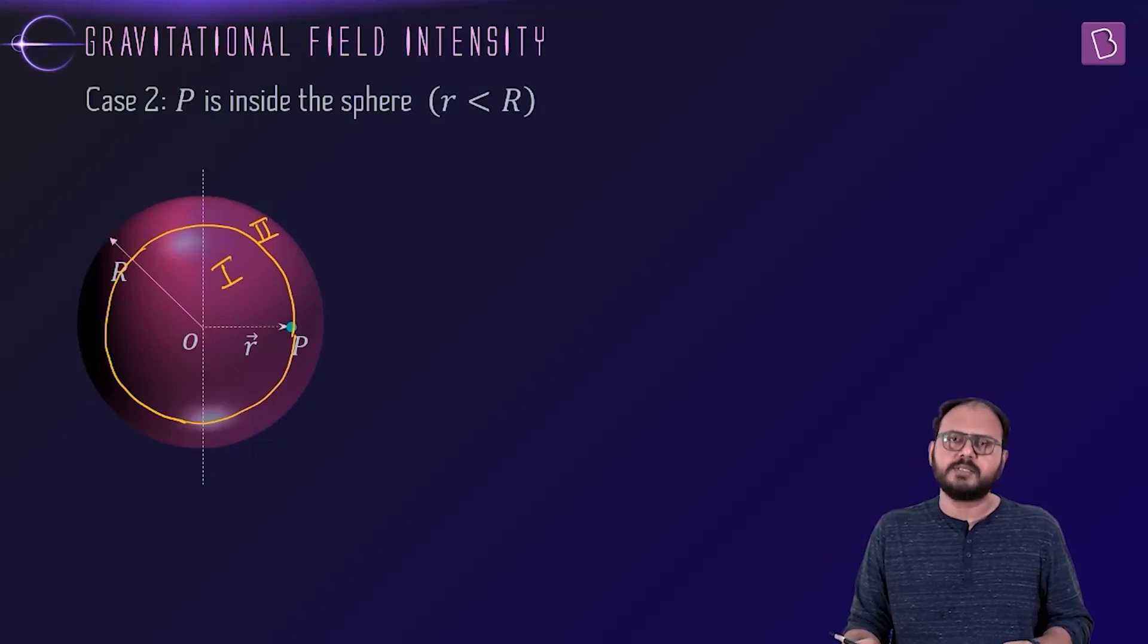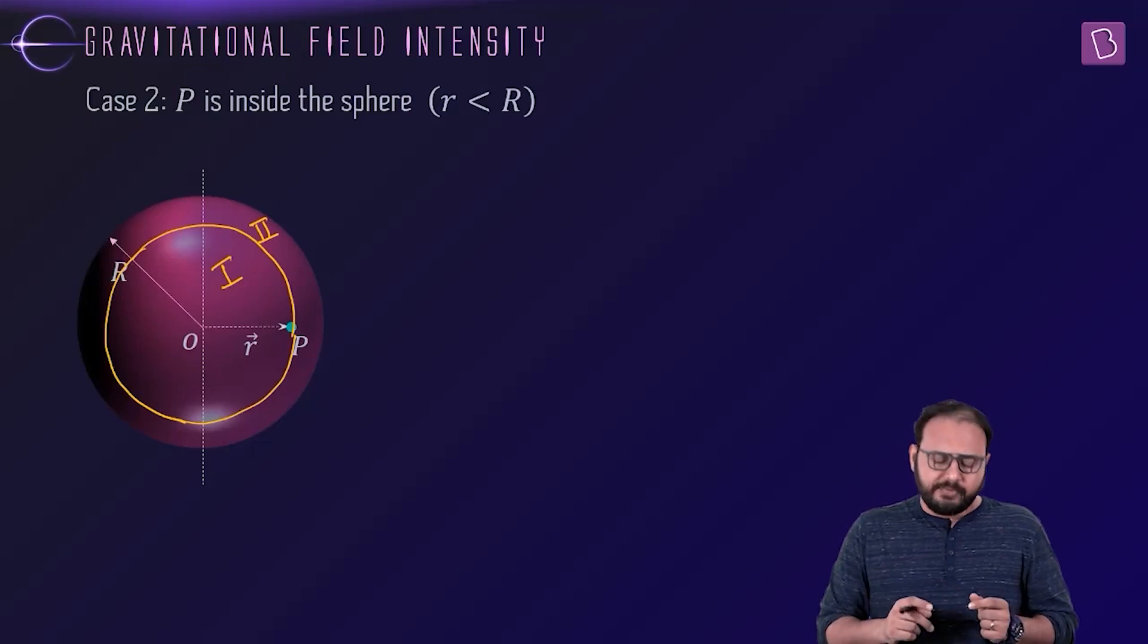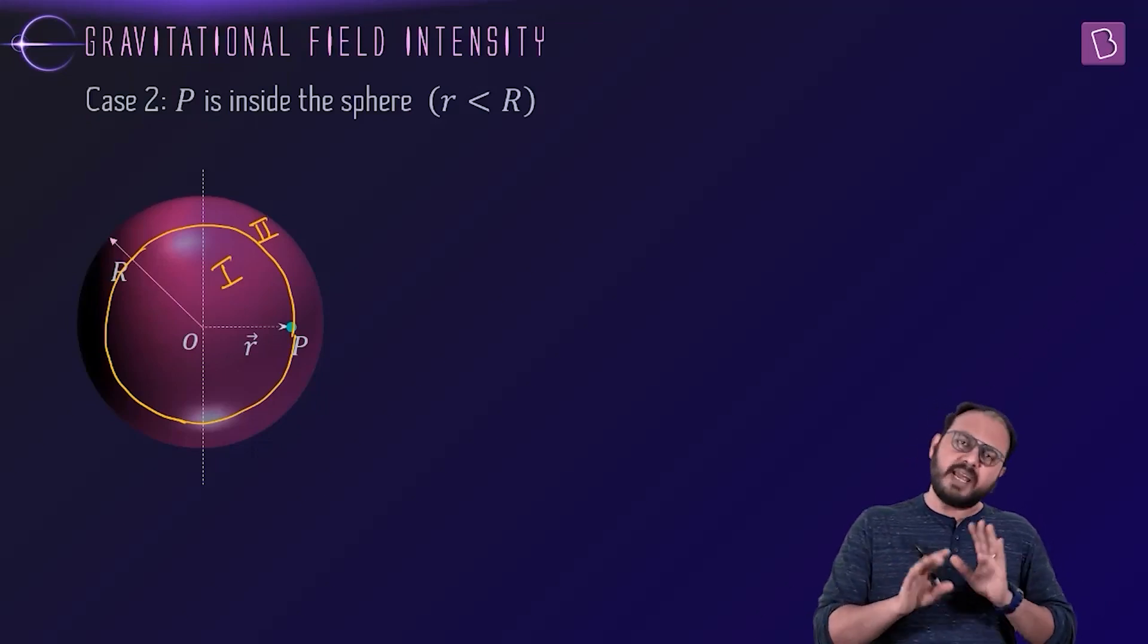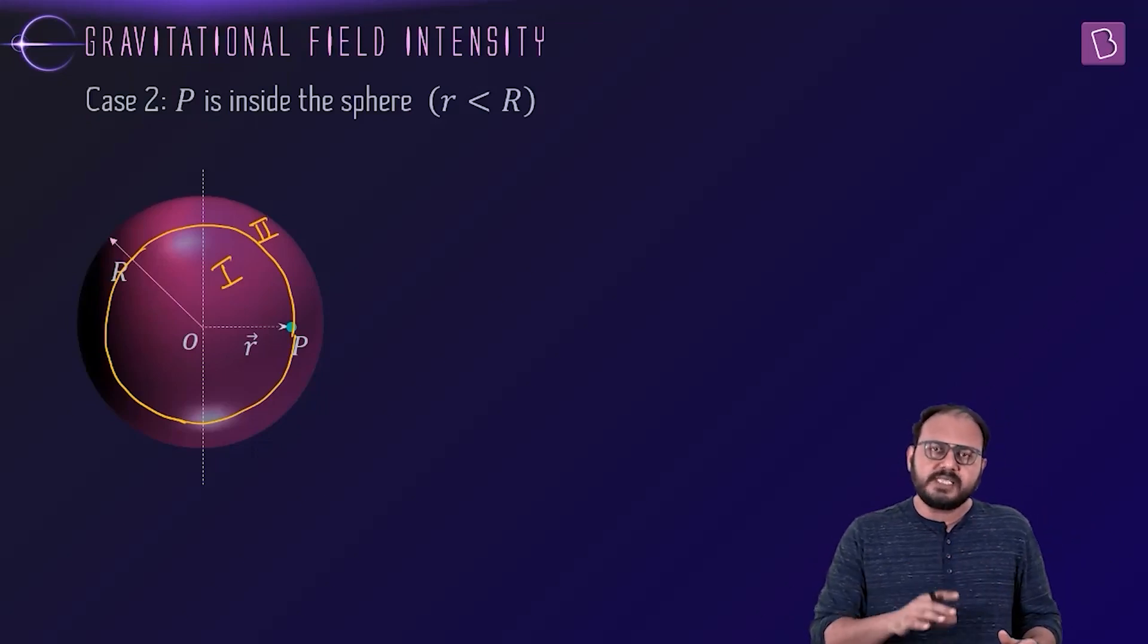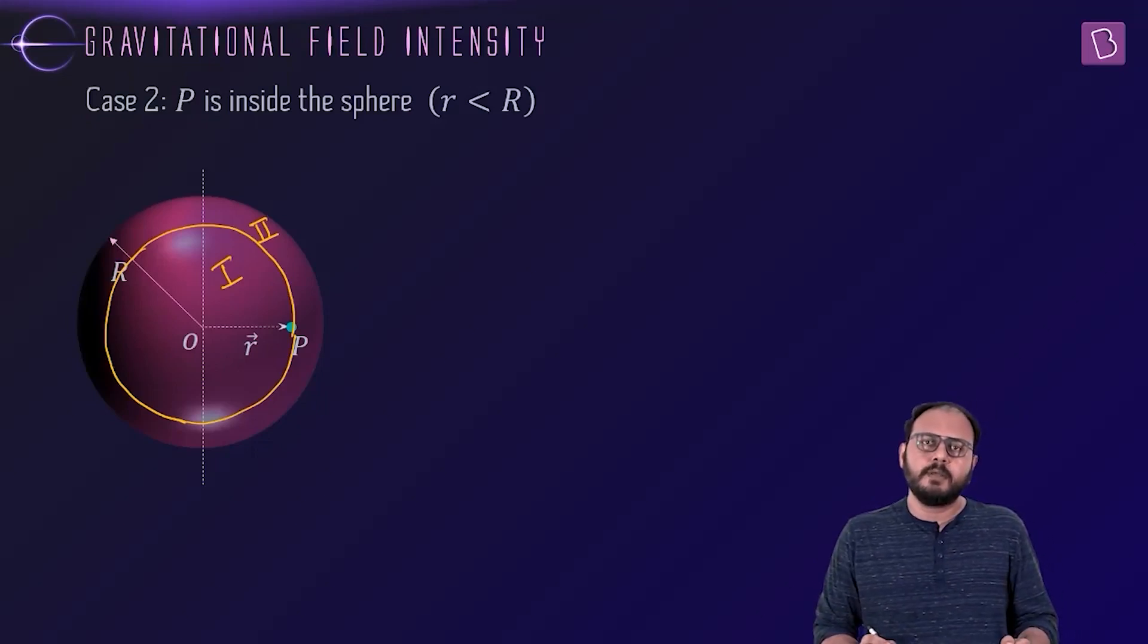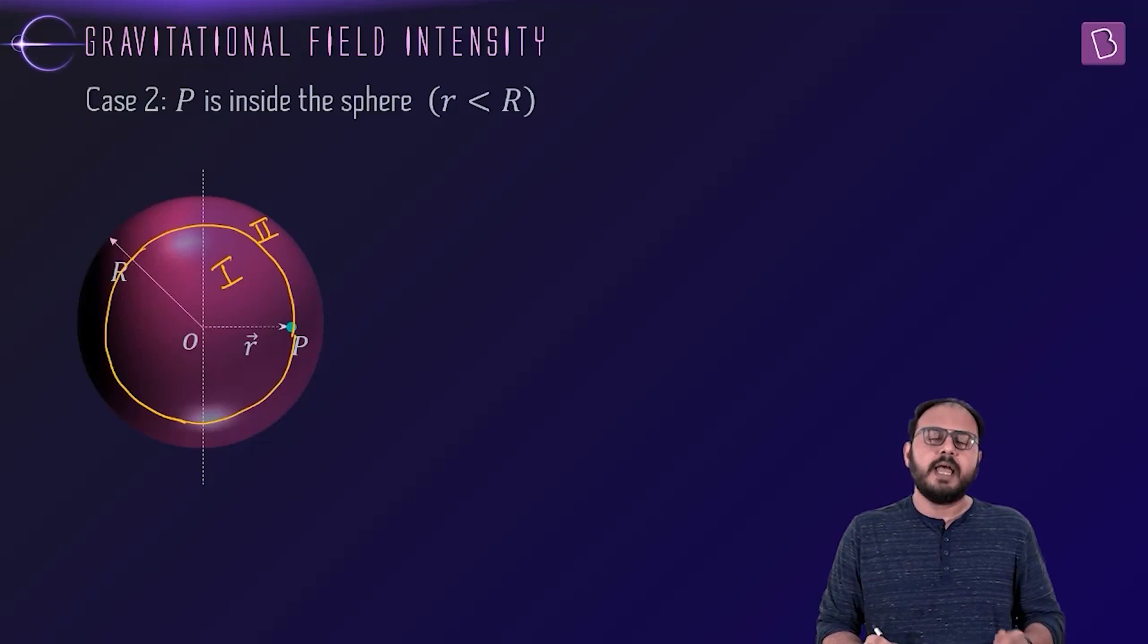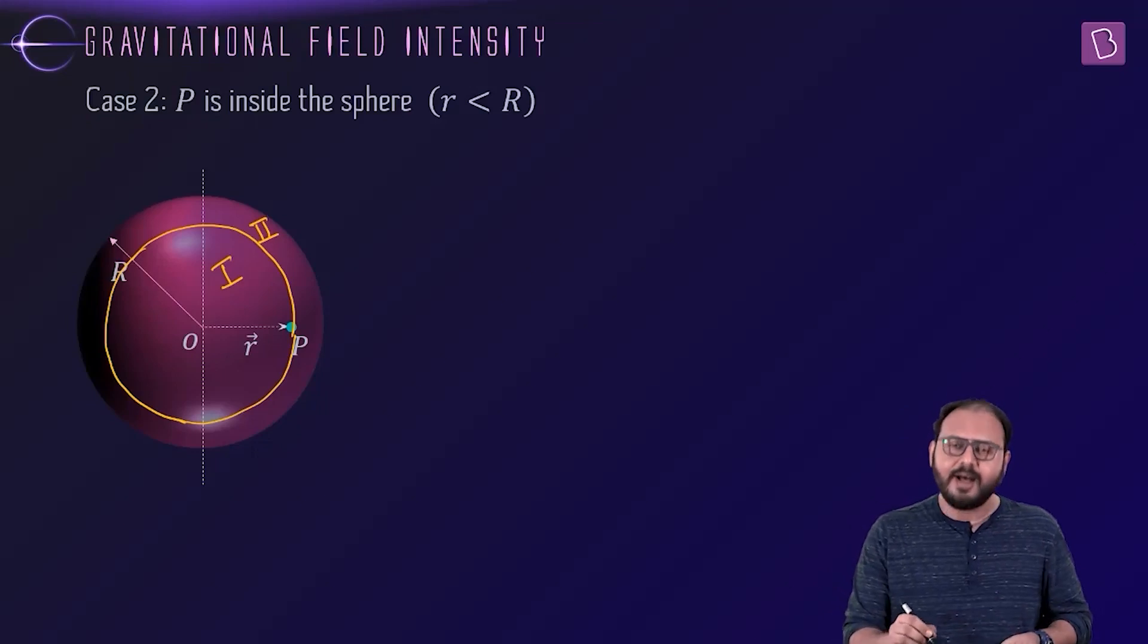I drew a sphere of smaller radius. Of all the trillion shells, do you agree that the shells for which this point P is external are the ones located in the first part? And for all the shells in the second part, this point P is internal. So for all the shells in part one, shell theorem two is applicable. And for all the shells in part two, shell theorem one is applicable - the zero.